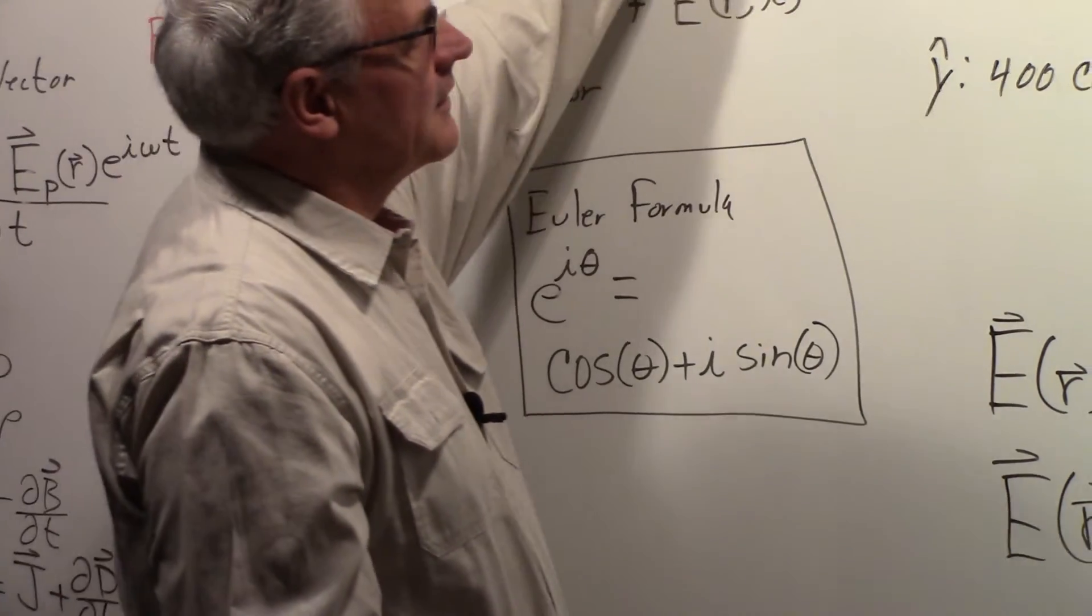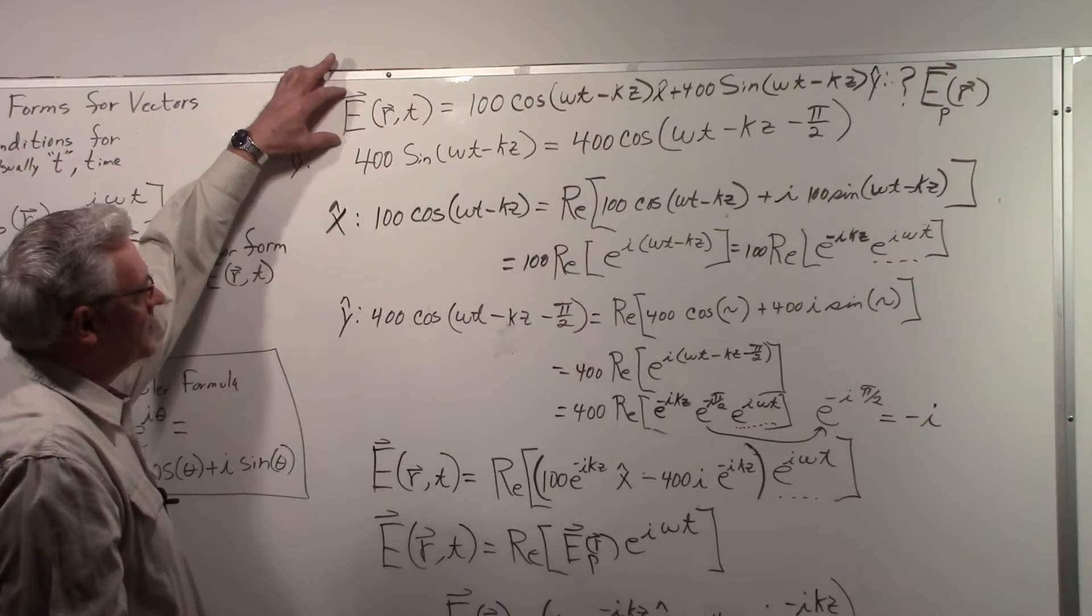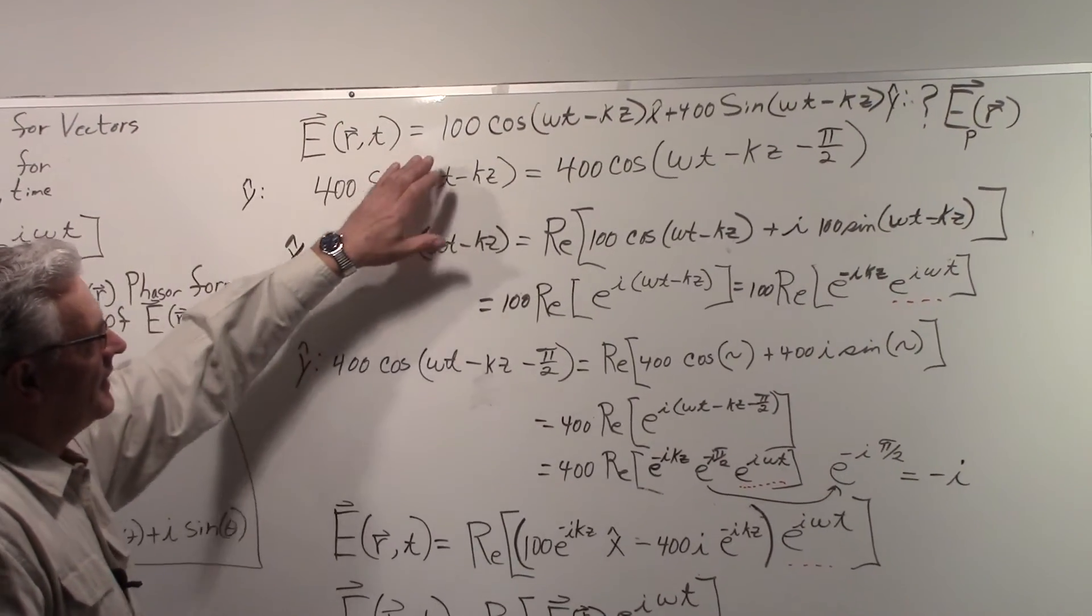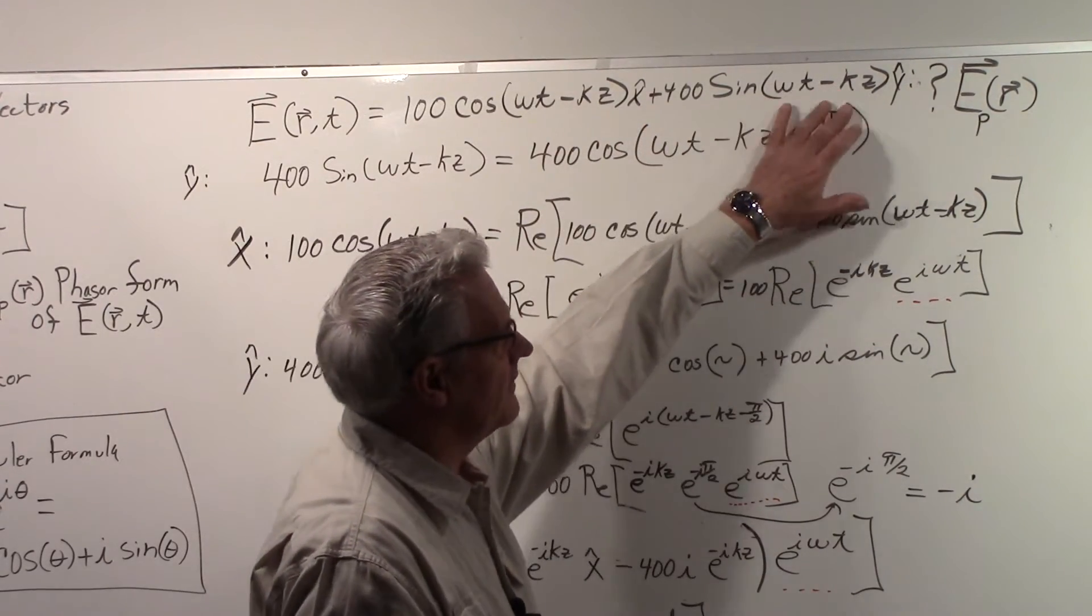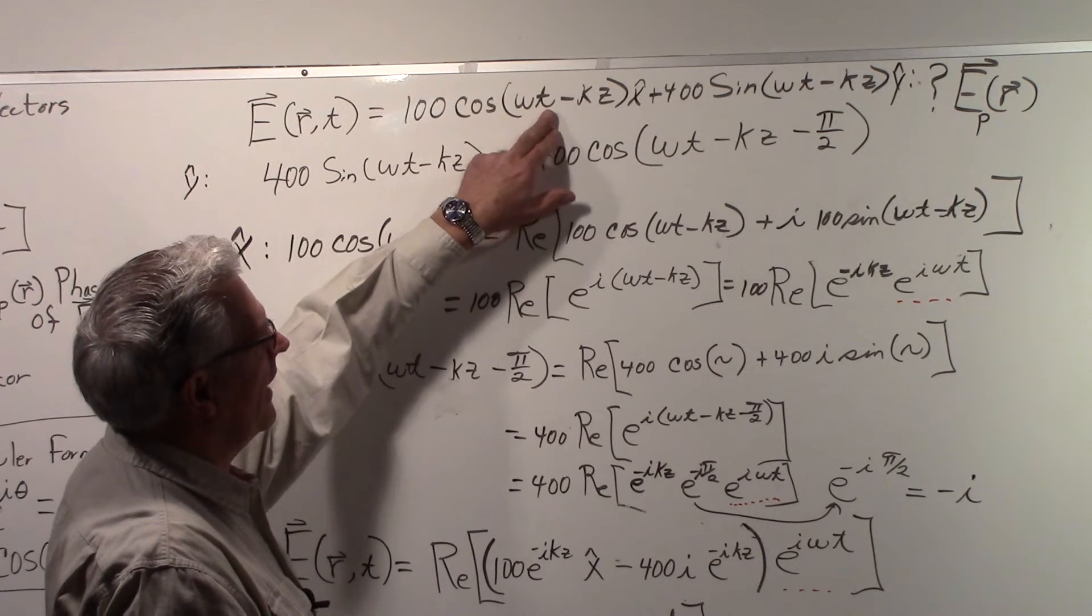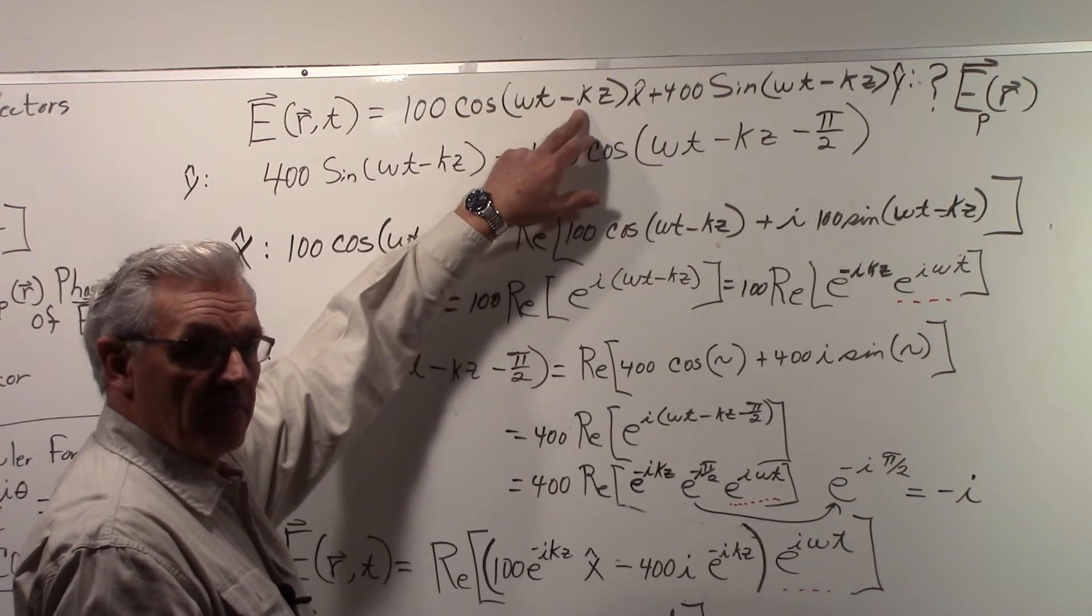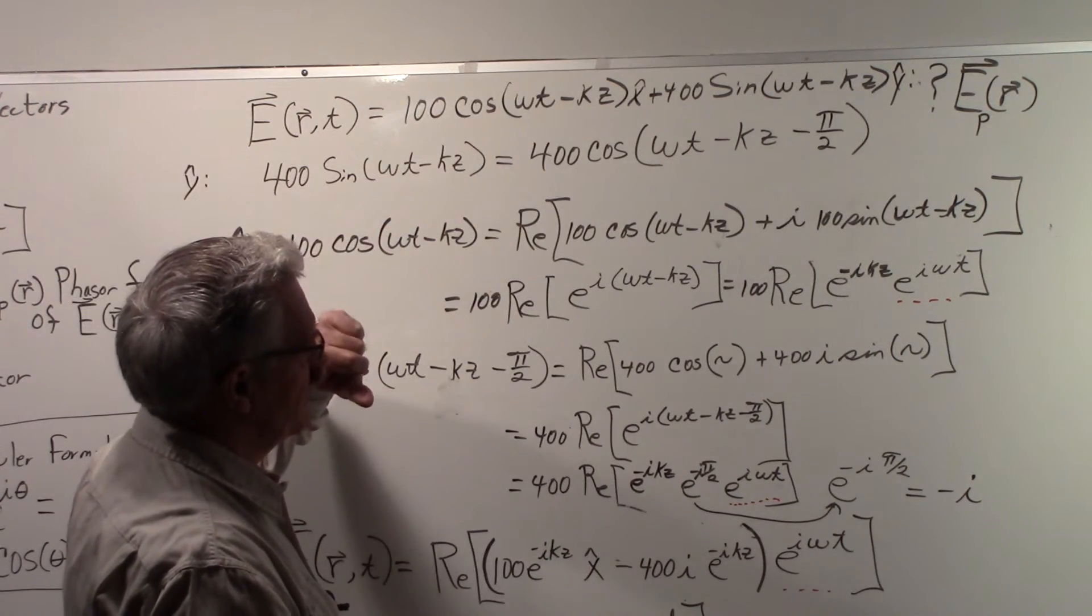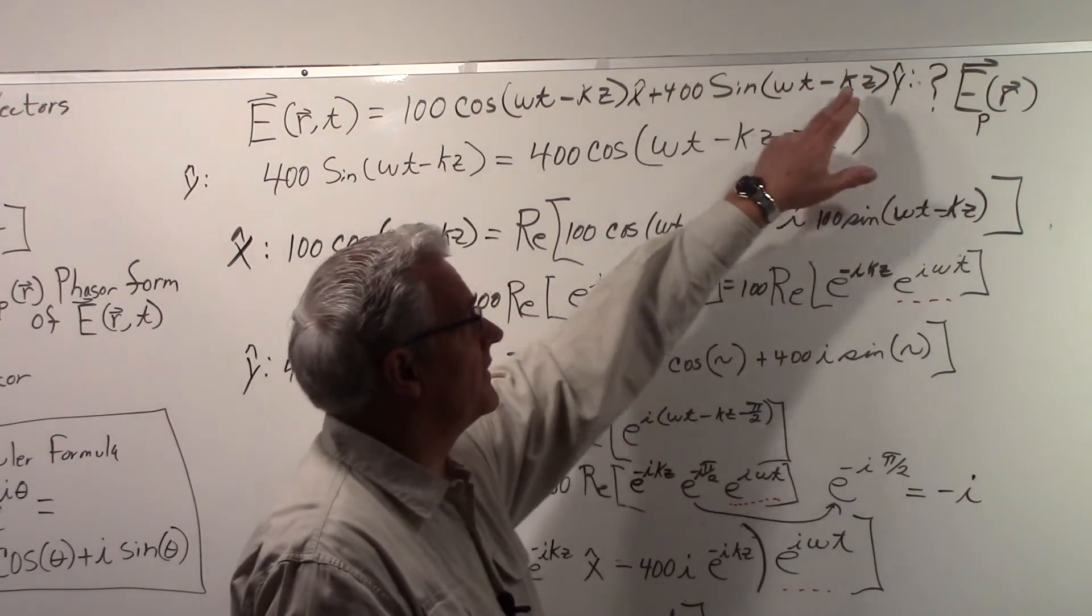So if we come over here now, we're going to say this is the equation for the electric field as a function of position and time. It's going to have an x component, and it's going to have a y component. It has the time behavior of omega t, and the wave is propagating in the z direction with a propagation factor of k. We don't have to worry about the details on that. It's the omega t that we're really interested in. And the question is, how do we find the phasor form of this vector?